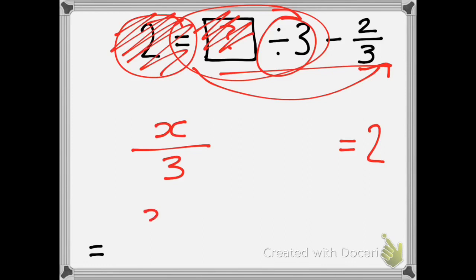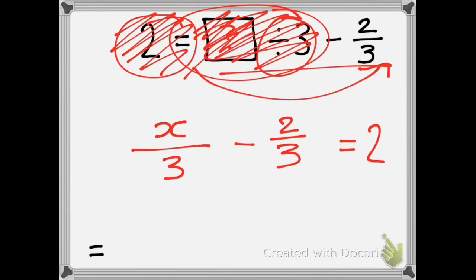Please don't write x divided by 3 because we never see that in algebra. So now I've taken care of that part. I'm just left with take away two thirds, and there we go. So x over 3 or x divided by 3 take away two thirds gives me 2.